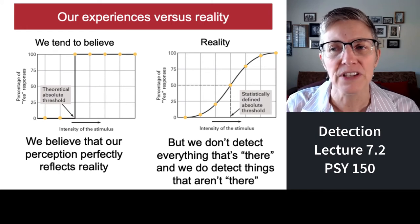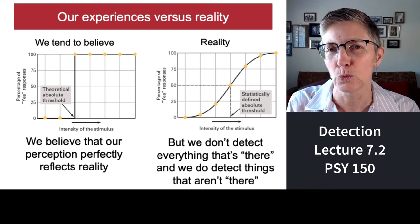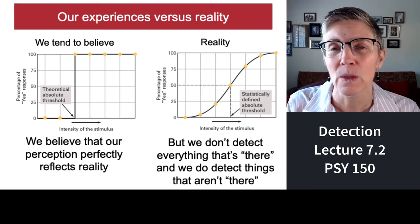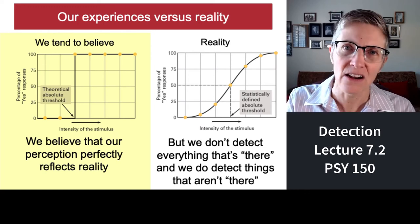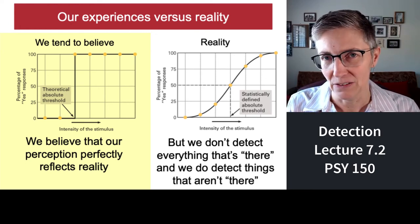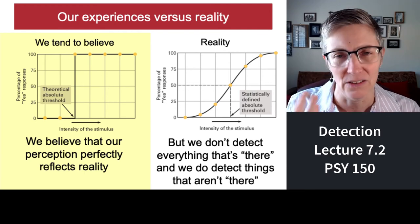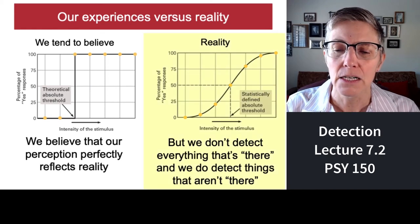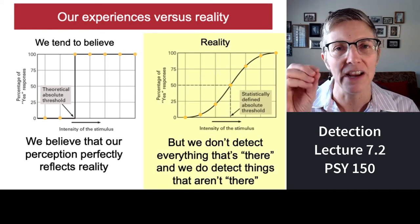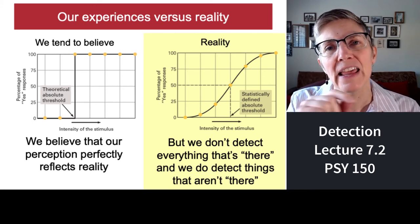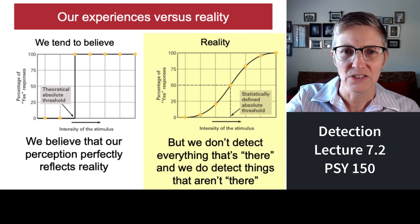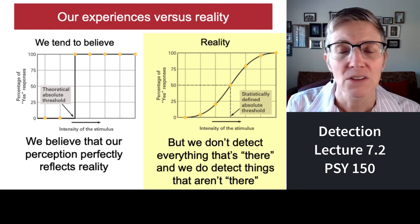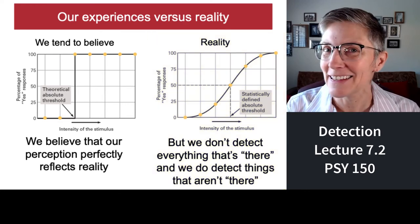Two graphs give us a comparison between how we think the world works and how it actually works. We live with the belief that if something's there, we'll detect it every time — that a stimulus is either there or not. But the reality is that stimulus energy, whether it's brightness, loudness, or texture, varies continuously and smoothly. That's why the graph on the right isn't a step function but a smooth S-curve. Sometimes things are there and we miss them; sometimes nothing's there and we think there is — so we have both misses and false alarms.